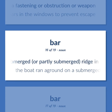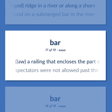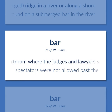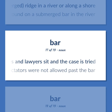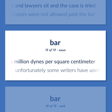A rigid piece of metal or wood, usually used as a fastening or obstruction or weapon — there were bars in the windows to prevent escape. A submerged, or partly submerged, ridge in a river or along a shore — the boat ran aground on a submerged bar in the river. A railing that encloses the part of the courtroom where the judges and lawyers sit — spectators were not allowed past the bar. A unit of pressure equal to a million dines per square centimeter.